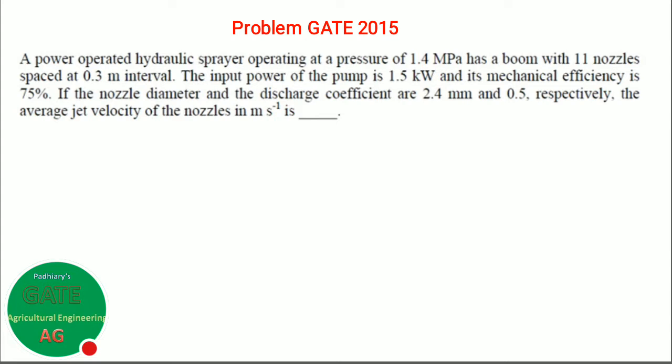The problem says: a power-operated hydraulic sprayer operating at a pressure of 1.4 MPa has a boom with 11 nozzles spaced at 0.3 meter interval. The input power of the pump is 1.5 kW and its mechanical efficiency is 75%. If the nozzle diameter and the discharge coefficient are 2.4 mm and 0.5 respectively, the average jet velocity of the nozzle in meter per second is how much.